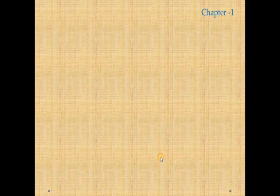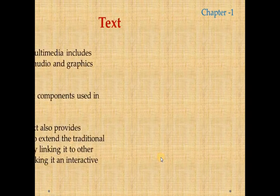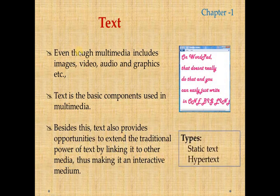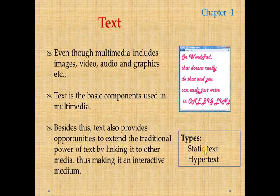The first component is text. Even though multimedia includes image, video, audio, and graphics, text is the basic component used in multimedia. It's also a powerful tool. Regarding text in multimedia, there are two things: one is static text and another one is hypertext. So what is the difference between the two?